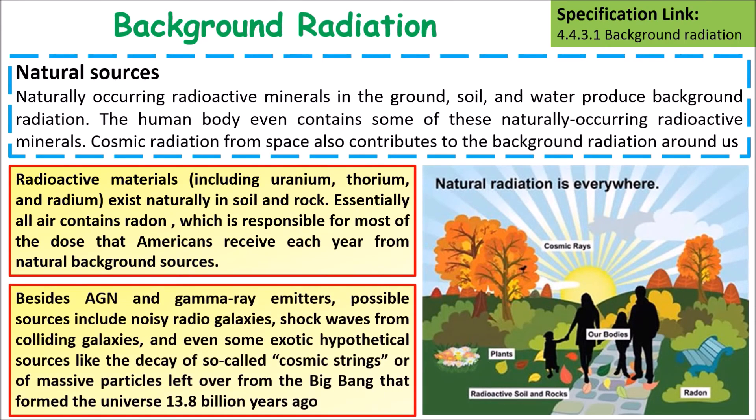Besides gamma ray emitters, there is background radiation from cosmic background radiation, caused by shock waves from colliding galaxies and even some exotic hypothetical sources like the decay of cosmic strings. There is also background radiation left over from the Big Bang that we can't do very much about.